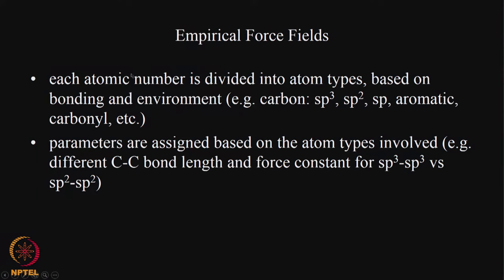In these empirical force fields, each atomic number is divided into atom types based on the bonding and environment. For example, carbon can be many types: sp3 carbon, sp2 carbon, sp carbon, aromatic carbon, carbonyl carbon, cyclopropane type of carbon, cyclopropene type of carbon, and so on. Parameters are assigned based on the atom types. Each of these carbons may have different carbon-carbon bond lengths, and the force constants will also change depending upon sp3, sp2, and so on.